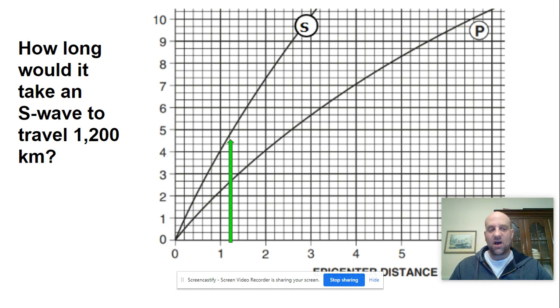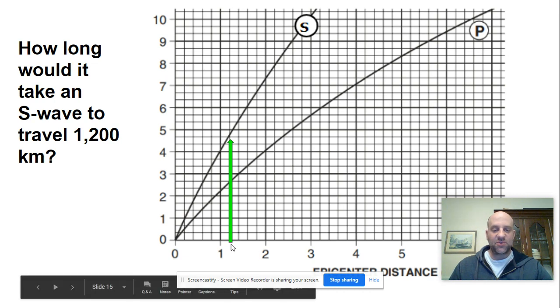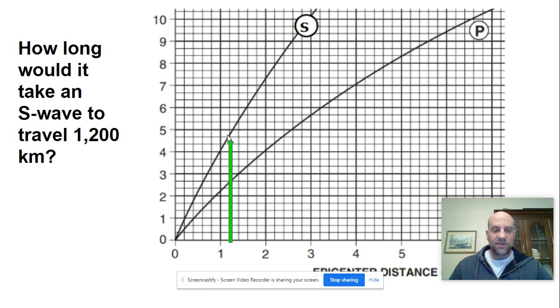Next we're going to take a look at how long would it take an S-wave to travel 1200 kilometers. To travel 1200 kilometers, we're going to go up to that S-wave and we are going to go over and see that would take about 4 minutes and 40 seconds.